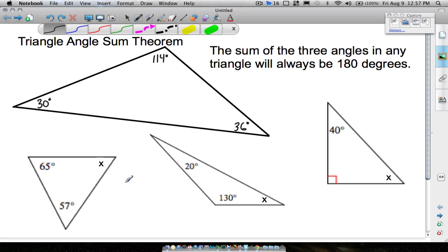So take your 65 and 57, add those two together. If you add 65 plus 57, you get 122. And then if we take 180 degrees minus 122, because we need that third angle right there, subtracting that, you get 58 degrees. So therefore, x is going to be equal to 58 degrees here.